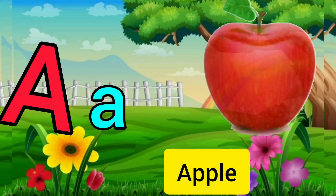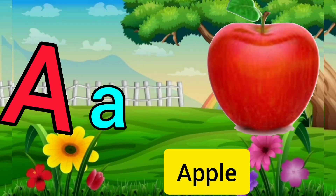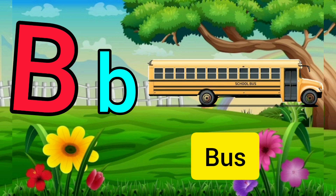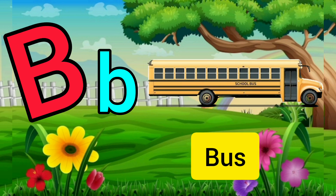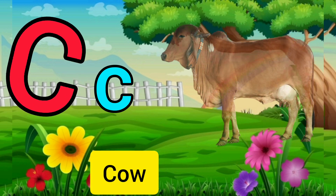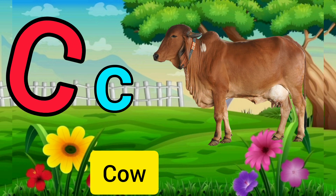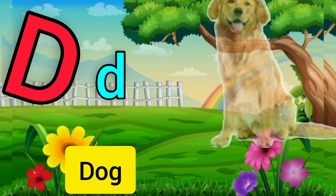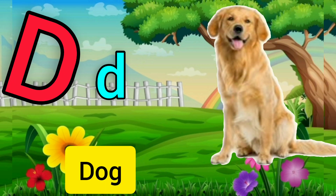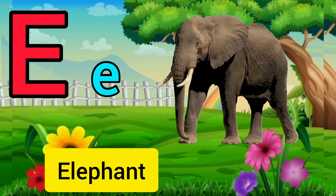A for apple, apple means apple. B for bus, bus means bus. C for cow, cow means guru. D for dog, dog means cuckoo.